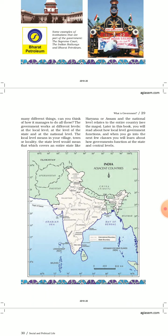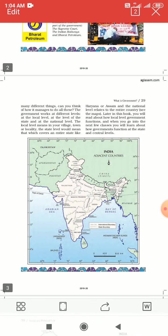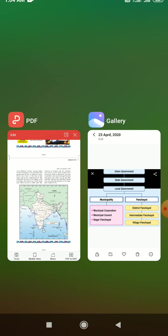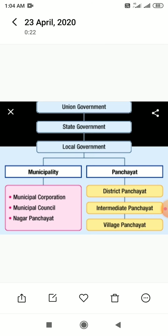Now students, I will show you a flowchart so that it will be more clear to you all. Here is the flowchart: Union government is the central government. Below it are the state government and the local government. The local government is divided into Municipality and Panchayat. Municipality has three parts: Municipal Corporation, Municipal Council, and Nagar Panchayat. Panchayat has District Panchayat, Intermediate Panchayat, and Village Panchayat.